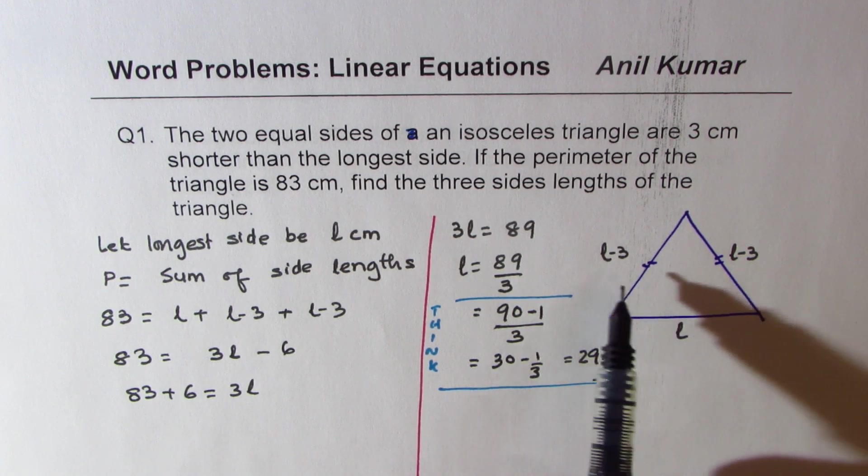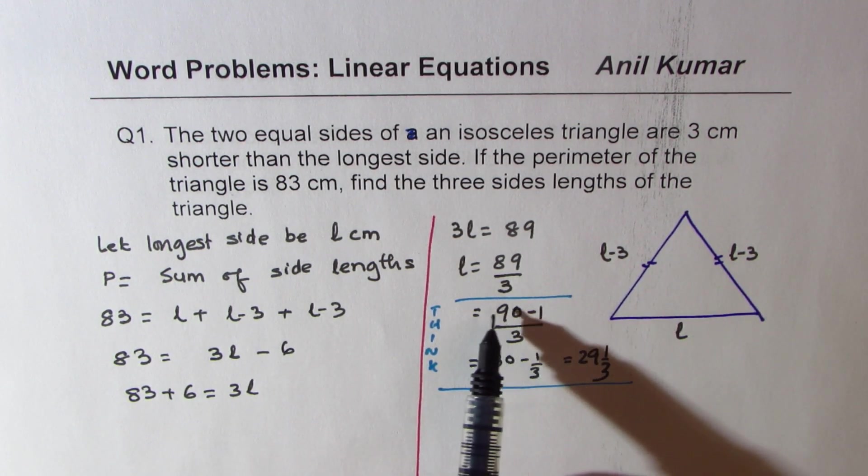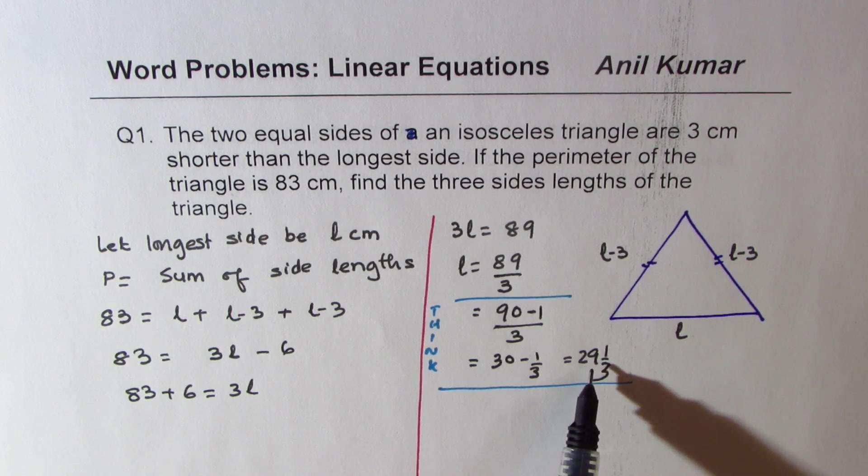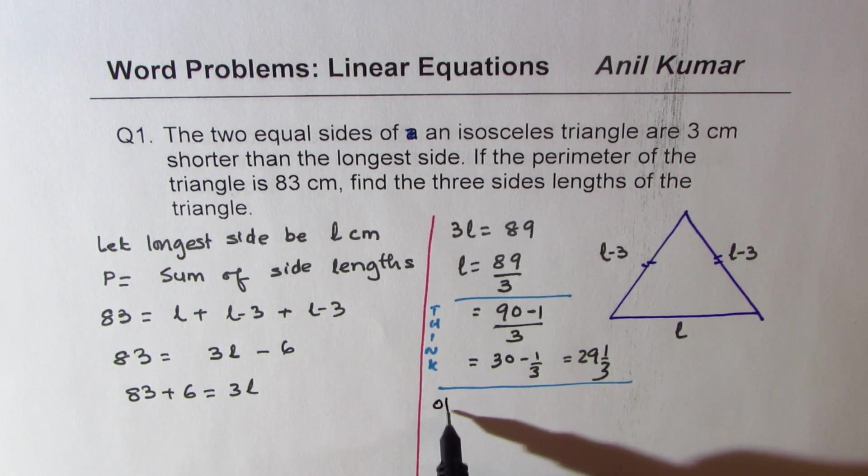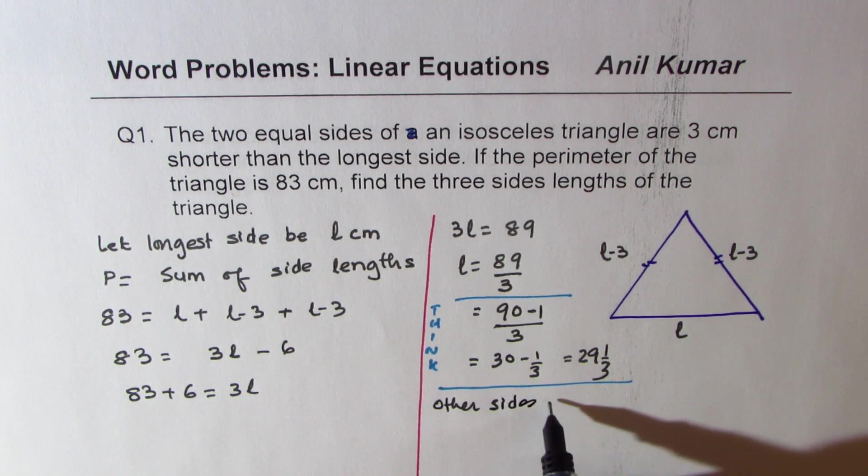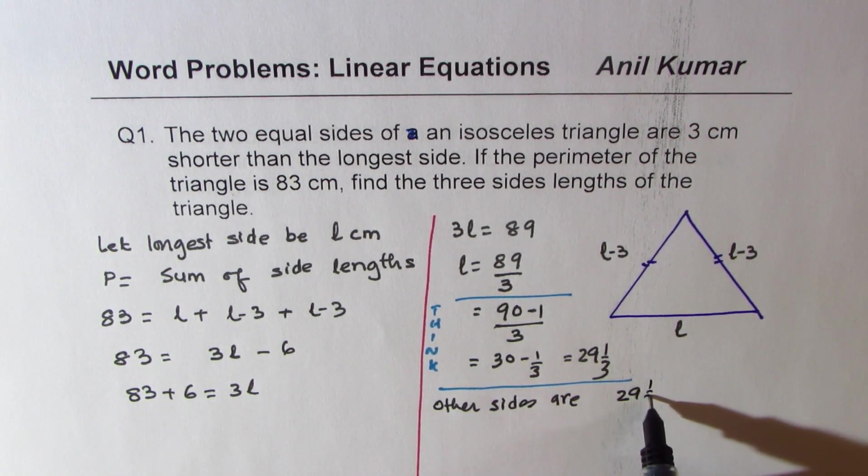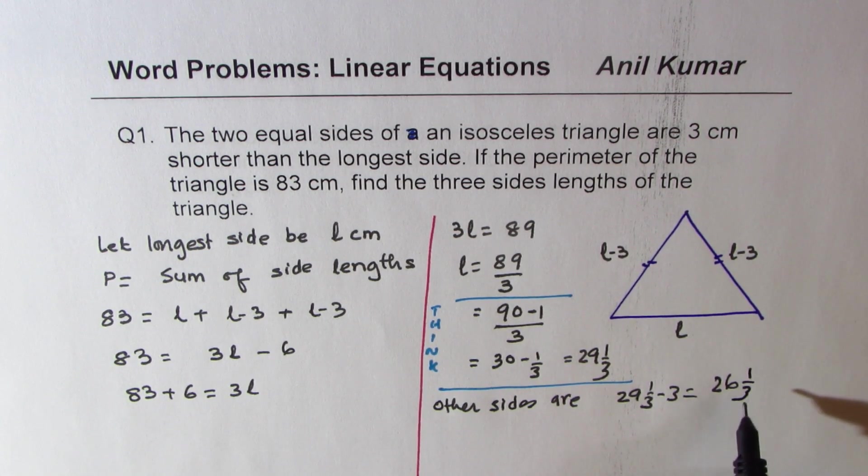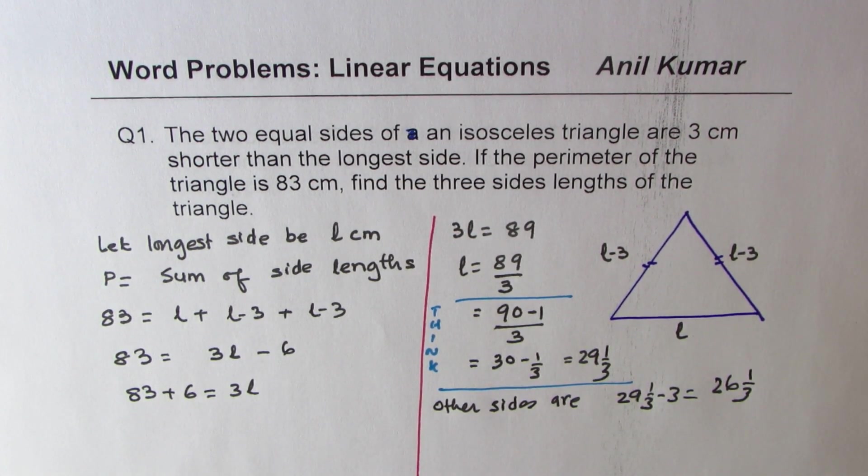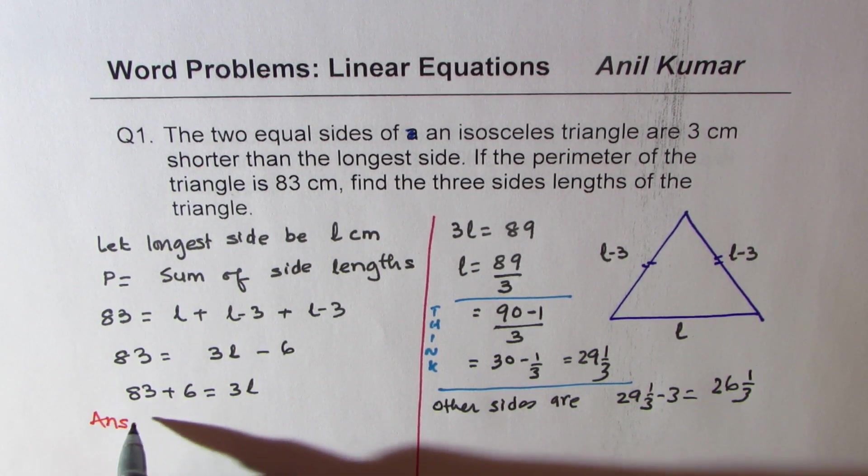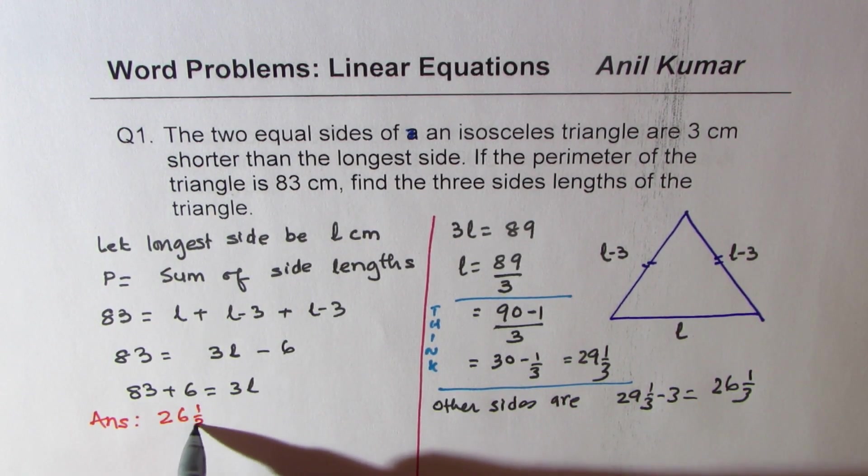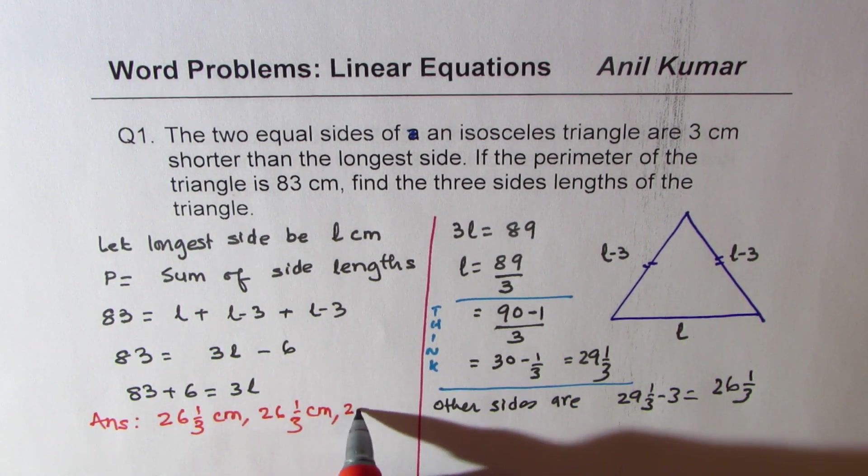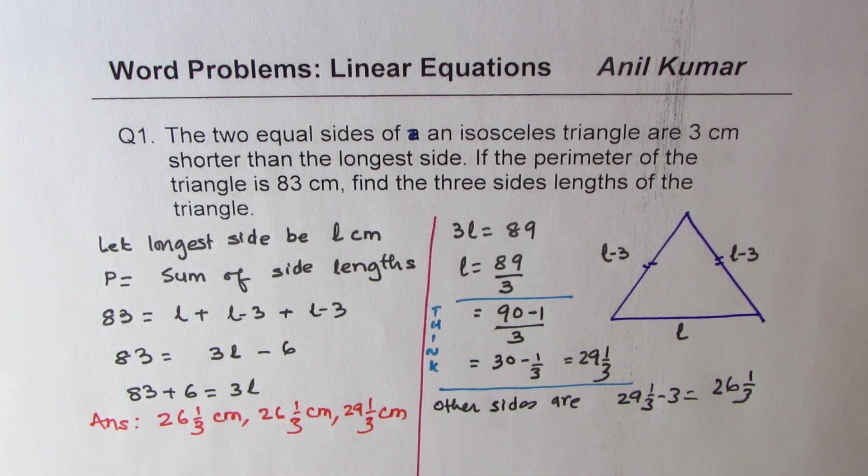So our answer will be one side is 29 and 1 over 3. The others are 3 less. If I do 3 less than 29, the other sides are 29 and 1 over 3 minus 3. So 29 minus 3 is 26, so we get 26 and 1 over 3. So we get our answer, which is 26 and 1/3 centimeters, 26 and 1/3 centimeters, and 29 and 1/3 centimeters.